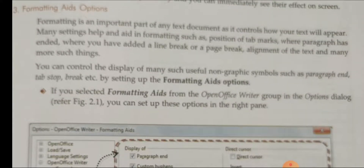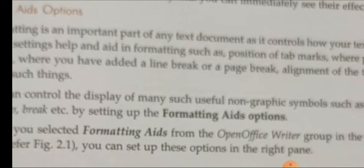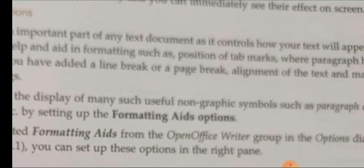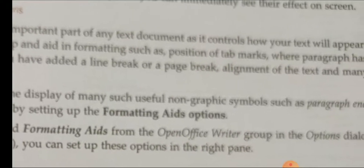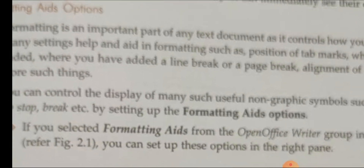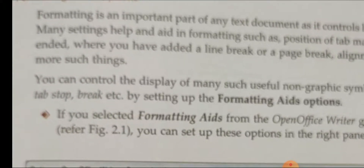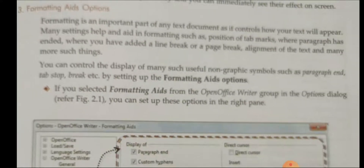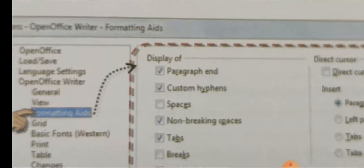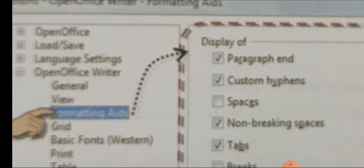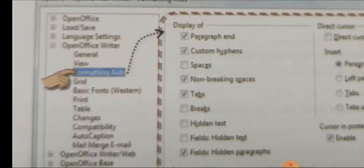Then there are formatting aids options. Formatting is an important part of any text document as it controls how your text will appear. Many settings help with formatting, such as position of tab marks, where paragraphs have ended, where you have added a line break or a page break, alignment of the text, and many more. You can go to options, then click on formatting aids — display of paragraphs and custom hyphen — and select the options you want.